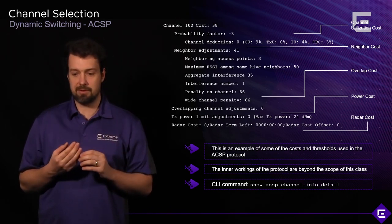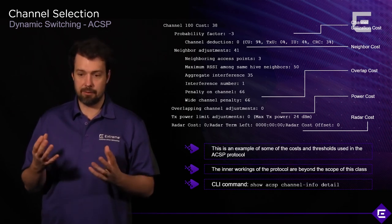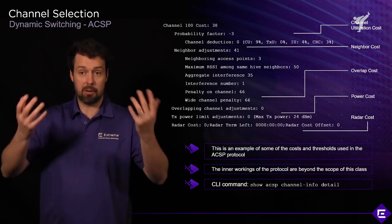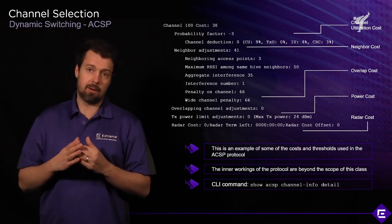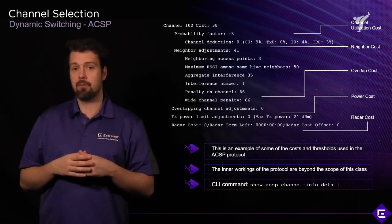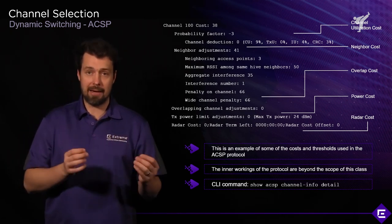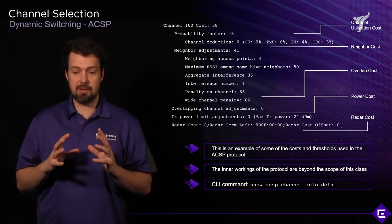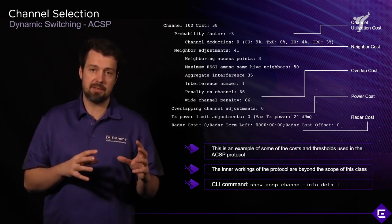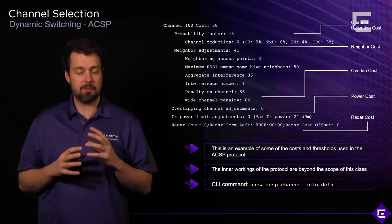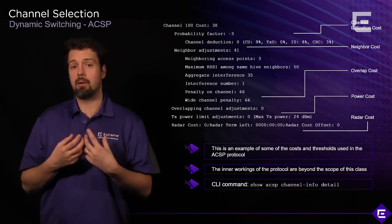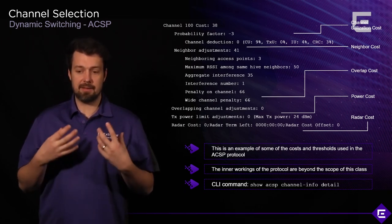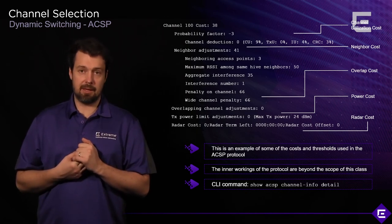The AP builds a cost table for all channels, and the channel with the least cost is selected. Additional considerations include neighboring access points, channel overlap, power levels, and radar detections. The higher the cost of a channel, the less likely it is to be selected. You can see these details by going to the access point CLI and running 'show ACSP channel info', which gives more details on how the AP evaluates each channel it is measuring.